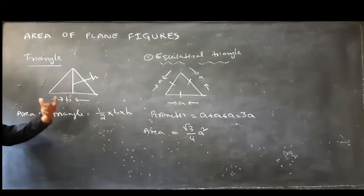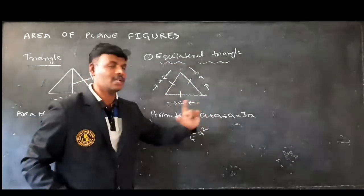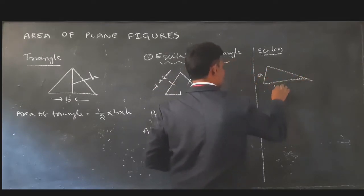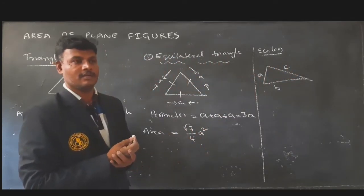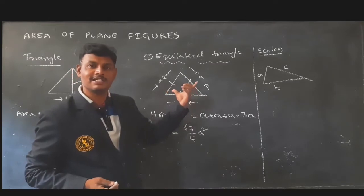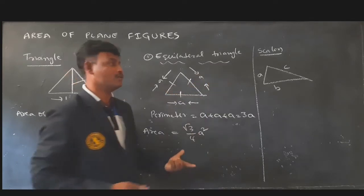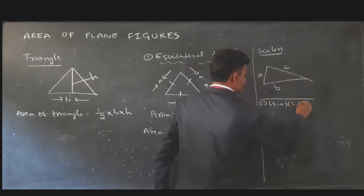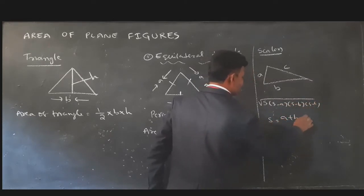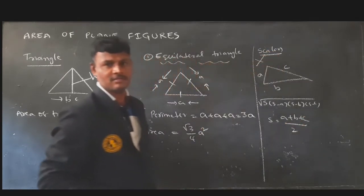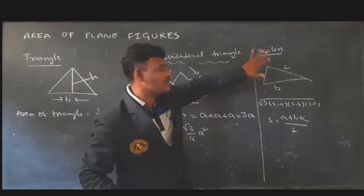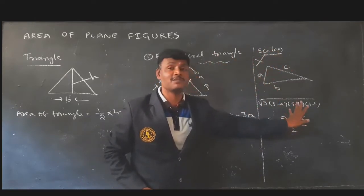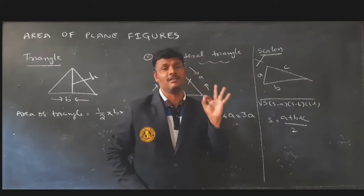Generally, the formula is half into base into height, but the area of an equilateral triangle is root three by four A square. In a scalene triangle, all three sides are not equal. Let the lengths be A, B, and C. To find the area of this triangle, the formula is under root of S into (S minus A) into (S minus B) into (S minus C), where S is equal to A plus B plus C by two — that is half of the perimeter.